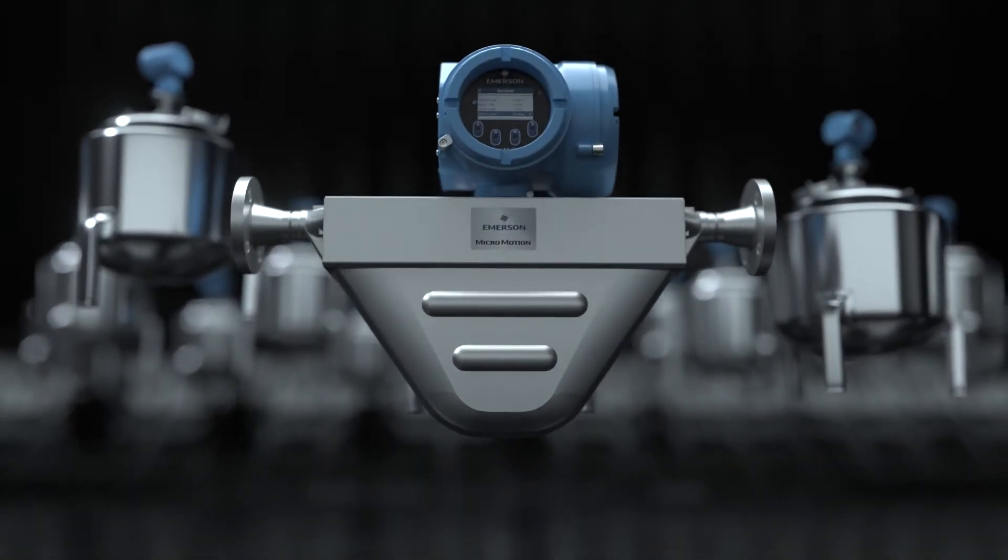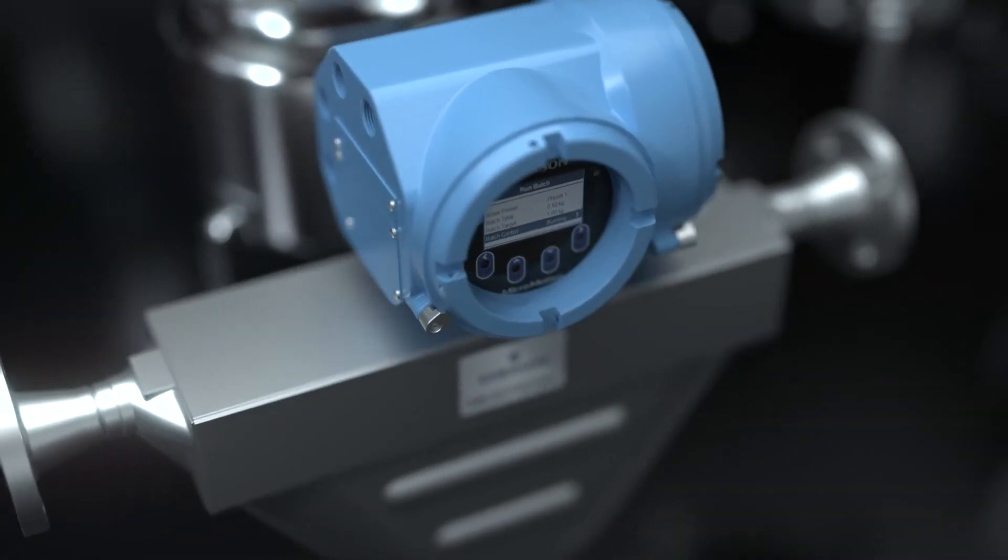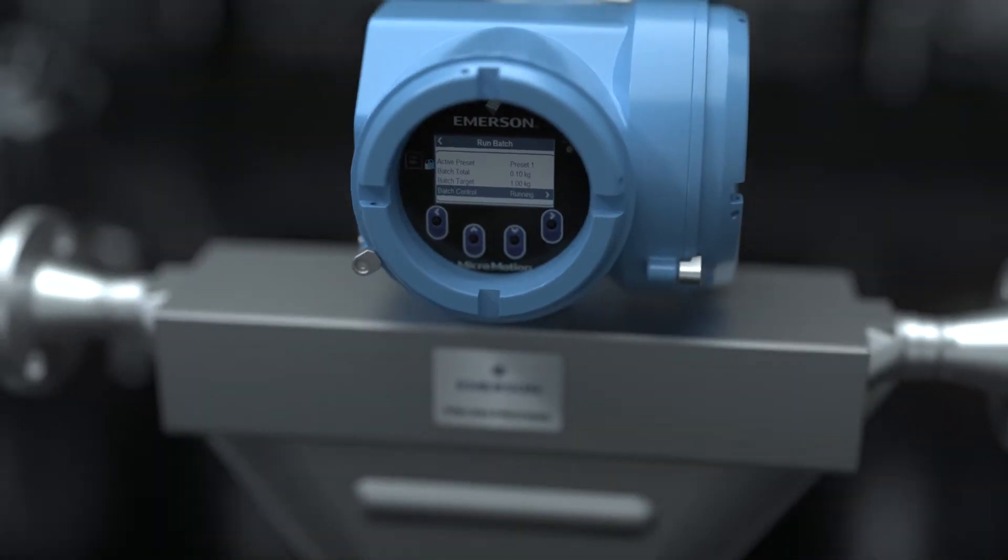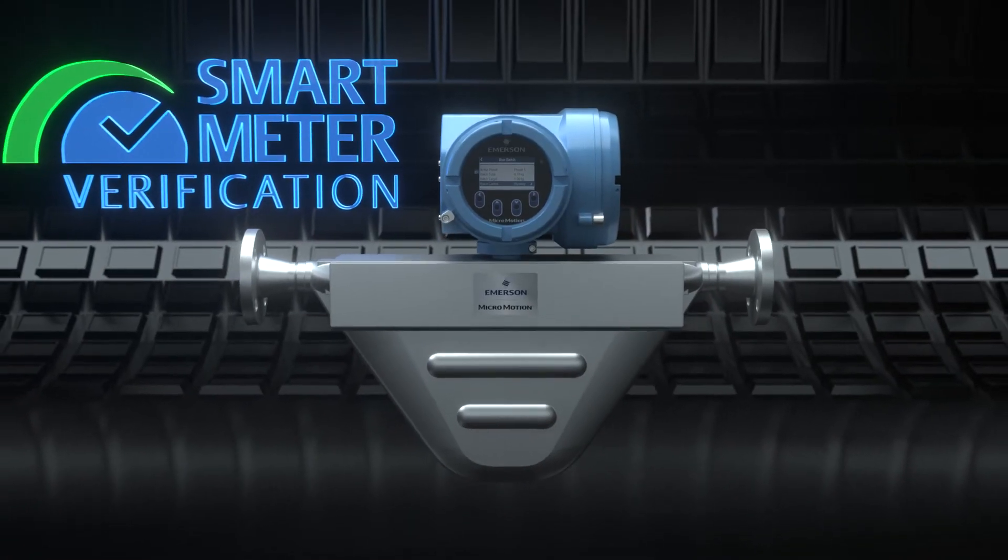But the Micromotion F-Series flow meters with direct density measurement ensure your product is on spec every time. Any upsets in the measurement can be immediately alerted via our proprietary smart meter verification software.